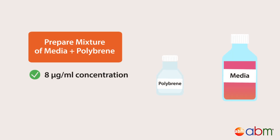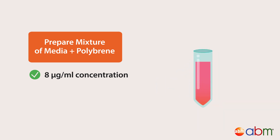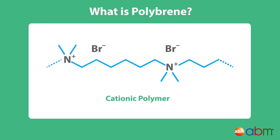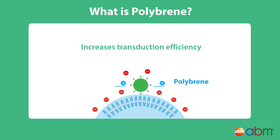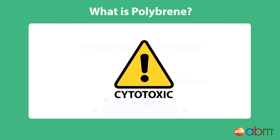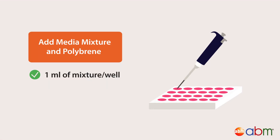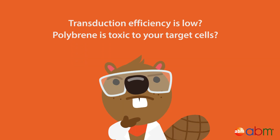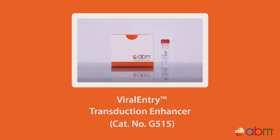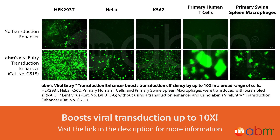Infecting your target cells: prepare a mixture of complete culture media and polybrene at a concentration of 8 micrograms per ml. Polybrene is a cationic polymer that neutralizes repulsive charges between the virus and cell surfaces to increase transduction efficiency, but be careful — excessive exposure can cause cytotoxicity. Remove the growth media in each well and replace with 1 ml of the mixture per well. If transduction efficiency is low or polybrene is toxic to your target cells, add viral entry transduction enhancer instead of polybrene at a ratio of 1 to 100. Viral entry has been shown to boost viral transduction up to 10 times.